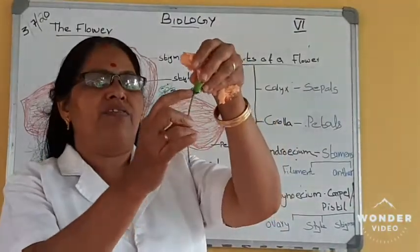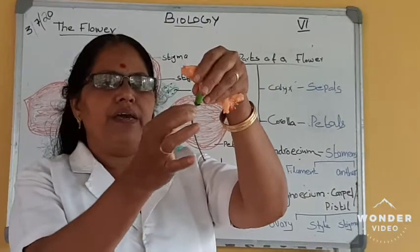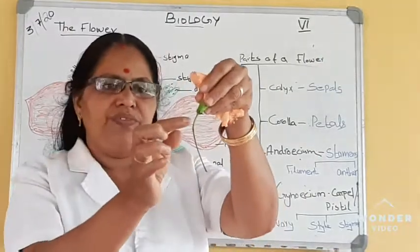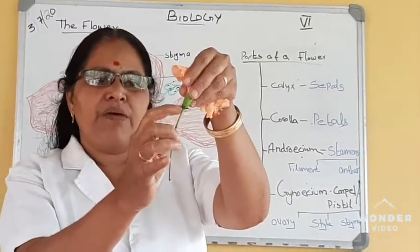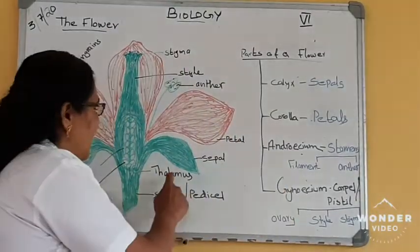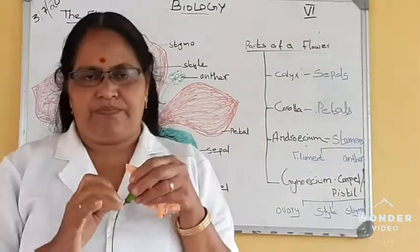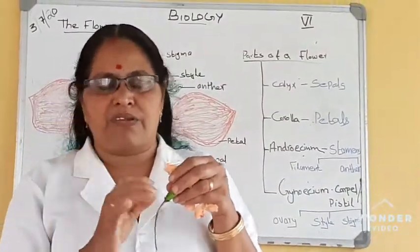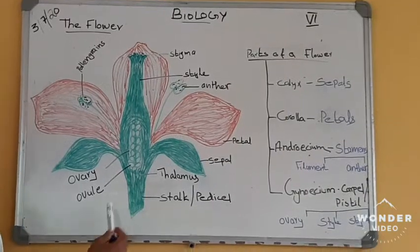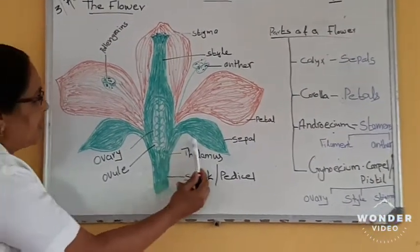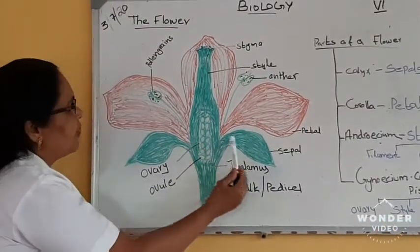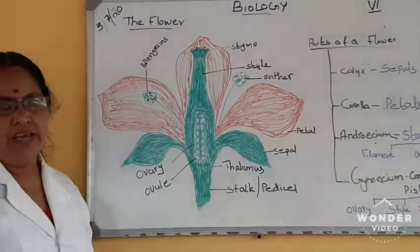Then the upper part of the pedicel — here you can see this upper part, this is the stalk. You can see the upper part is bulged or enlarged. That part is called the thalamus, or receptacle of the flower. The stalk of the flower is the pedicel, and the upper part of the pedicel that is bulged or enlarged is the thalamus. All other parts of the flower are born on the thalamus.